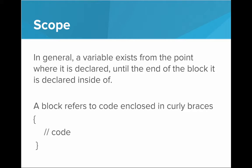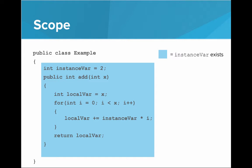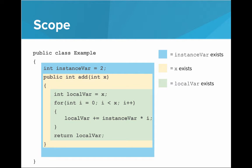In general, a variable exists from the point where it's declared until the end of the block that it's declared inside of. A block refers to code enclosed in curly braces. For example, in this class we see that the instance variable instanceVar is defined on the first line, so instanceVar exists from that point until the end of the class — it exists in every method throughout the class. The parameter x exists throughout the entire method add, but not outside of it. Then localVar exists from its declaration line onward inside of the method add.